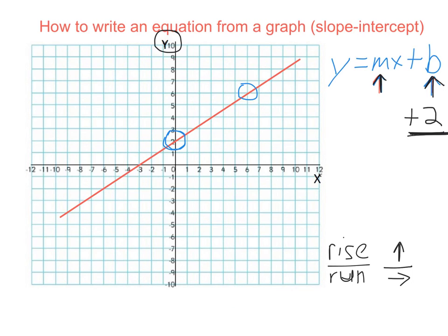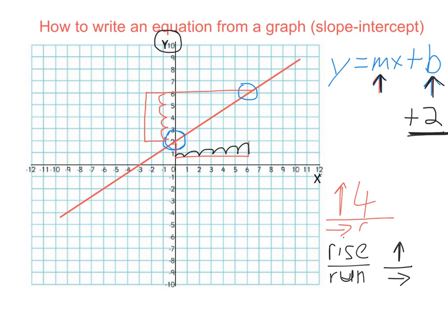I'm going to use those two points to measure how high it goes and how far it goes left and right. From this point up to this point, it goes 1, 2, 3, 4 — so we go up 4. And how far over does it go? It goes 1, 2, 3, 4, 5, 6 — so over 6. I went up 4 and over 6. All I have to do now is simplify: 4 over 6 simplifies to 2 thirds. That is the slope — I counted the steps up and divided by the steps across.